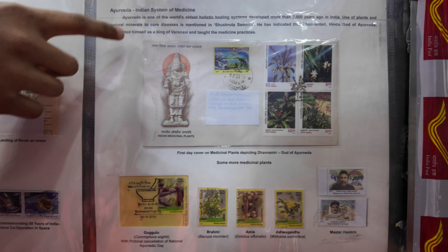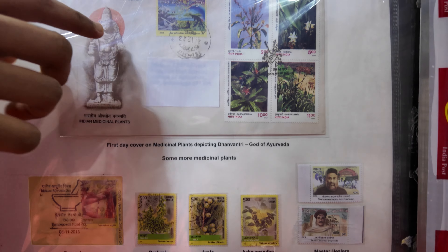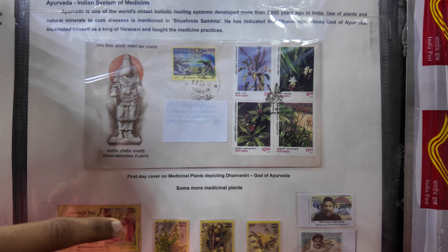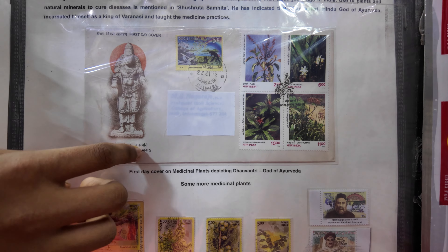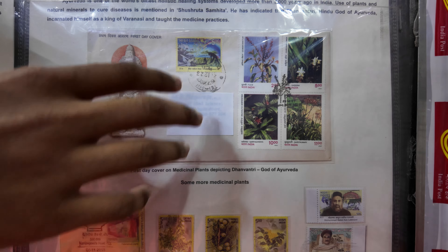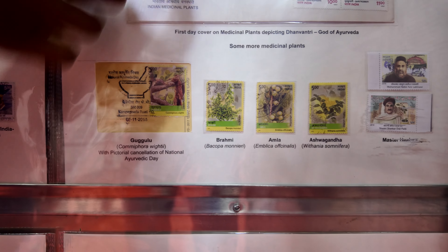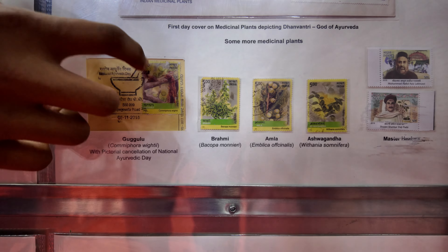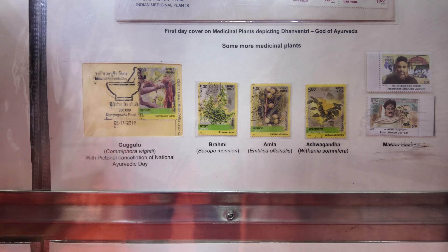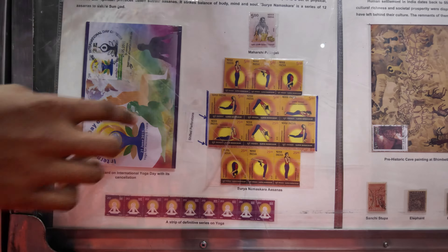Coming to Ayurveda, the Medical Science. In ancient India we had a special medical field. This is the god Dhanvantri depicting Ayurveda. These are the master healers of India, and these are the medicinal plants. This is the special bowl in which Ayurveda preparations were made. Coming to Yoga — we have a Yoga Day. This is the health-for-all yoga theme. Maharshi Patanjali invented yoga.